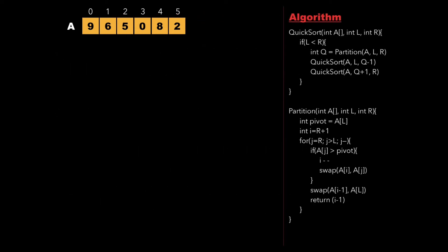Now let's have a look at the algorithm for quicksort. The right side of the screen shows the quicksort algorithm which consists of two functions: quicksort and partition. Initially we call the quicksort function from a main function with the values of L and R as the left and right indices of the array A. So the values of L and R are 0 and 5 respectively. Then we check whether L is less than R, and if so we call the partition function which returns a value Q.